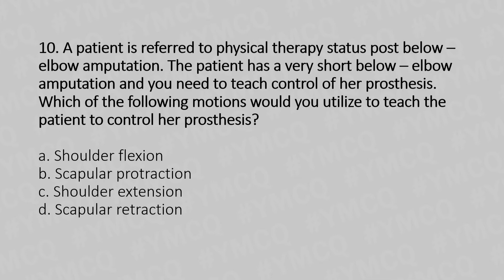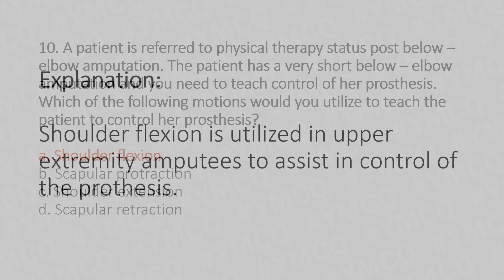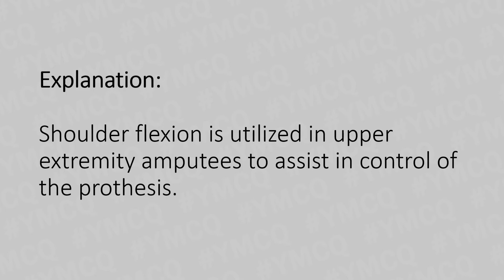The answer is Option A: shoulder flexion. Shoulder flexion is utilized in upper extremity amputees to assist in control of the prosthesis.